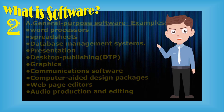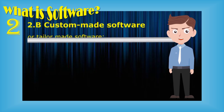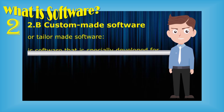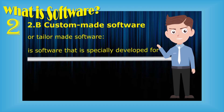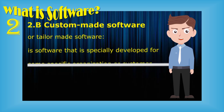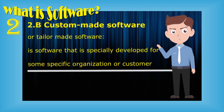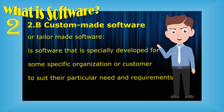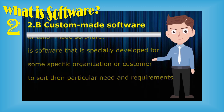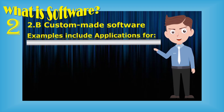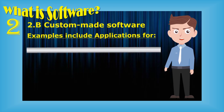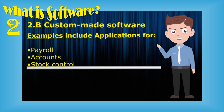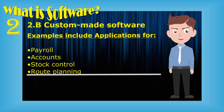The second type of application software is custom-made software, also called tailor-made software. This is software specially developed for a specific organization or customer to suit their particular needs and requirements. Examples include applications for payroll, accounts, stock control, route planning, and weather forecasting.